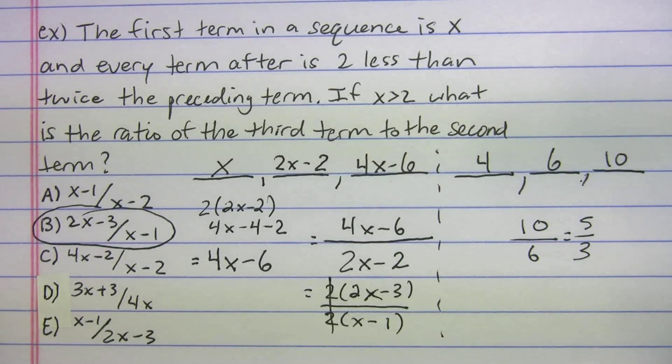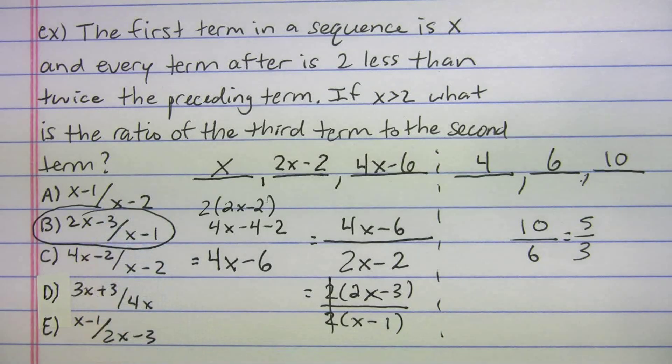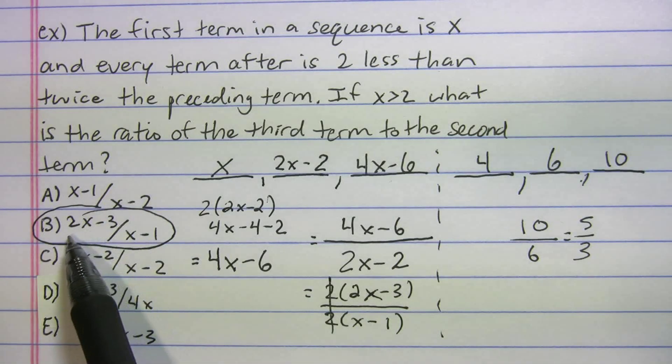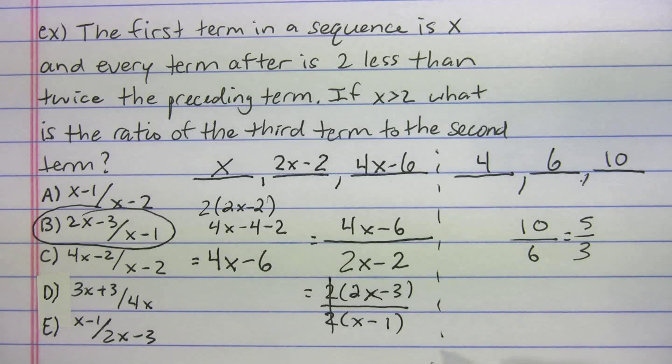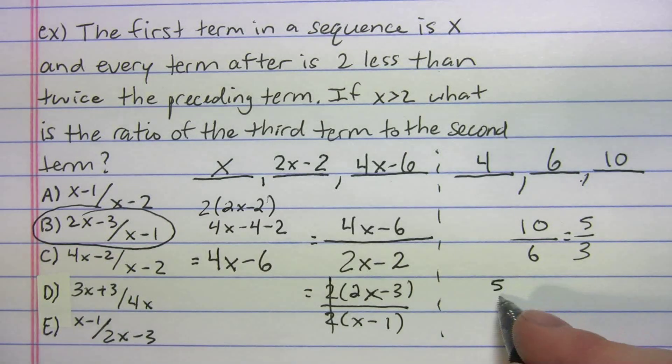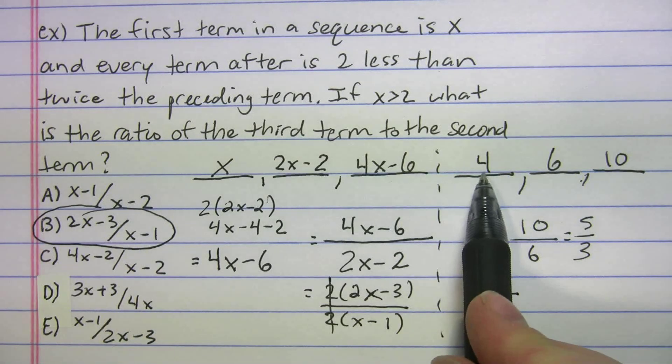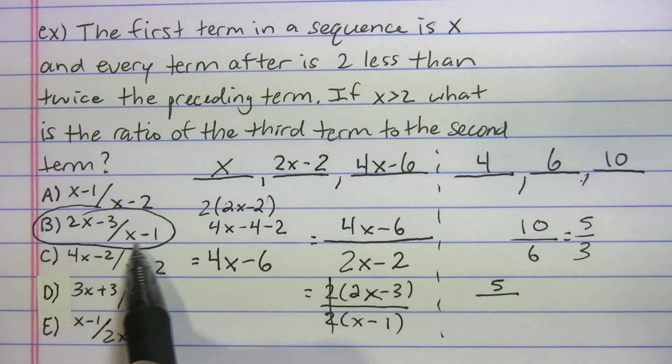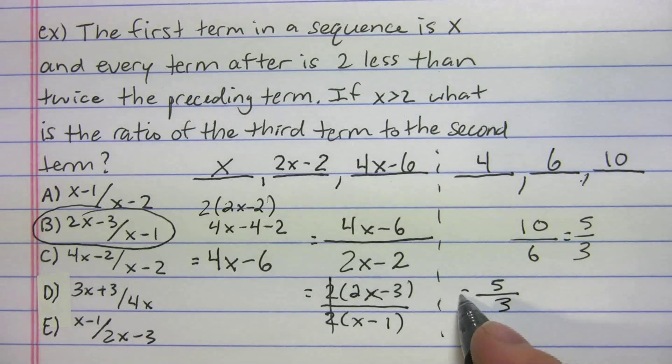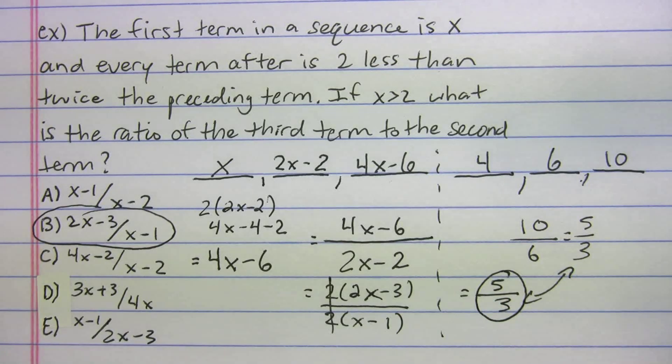You'd have to go through the choices and try and find it. You'd have to plug in 4 because that's what we picked for X. If you look at B, 2X minus 3 would have been 2 times 4, which is 8, minus 3, which is 5. What's on the bottom? X minus 1. We said X was 4, so 4 minus 1 is 3. And they match up, right? So we got the right answer. So B.